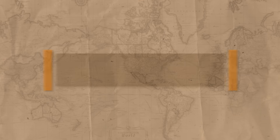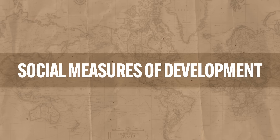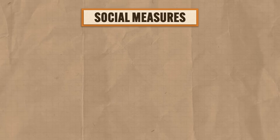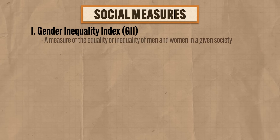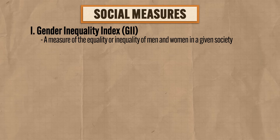Another way to measure a country's development is by considering social measures in addition to economic ones. The first important social measure is the Gender Inequality Index, or GII. This measures the equality or inequality of men and women in a given society. It's an important measure of development because, as we've seen over and over again, as the role of women changes in a society, it affects the society's economic development.